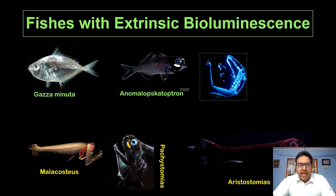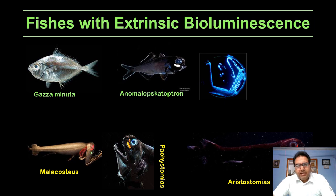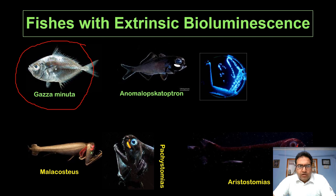Many deep sea anglerfish such as family Ceratioidei use a luminescent lure at the tip of a modified dorsal fin ray and host symbiotic bacteria related to genus Vibrio. These anglerfish are generally thought to use the illicium or esca to attract prey. Prey capture was also suggested in the case of Gaza minuta, which belongs to family Leiognathidae and displays a discrete projected luminescence.